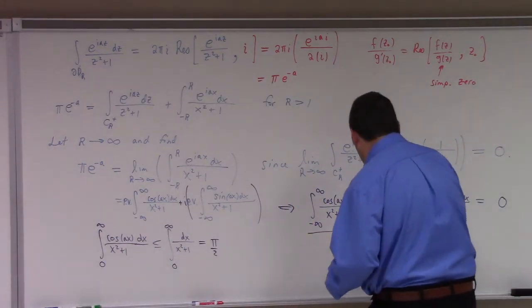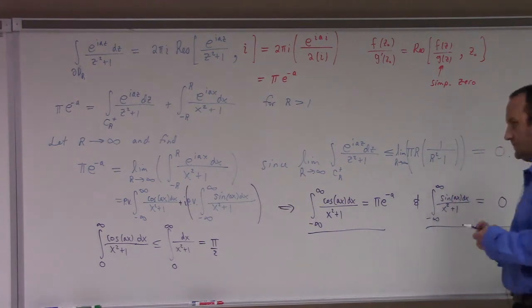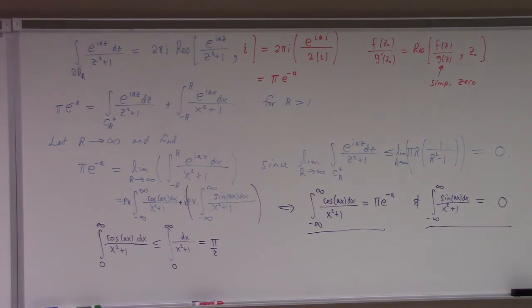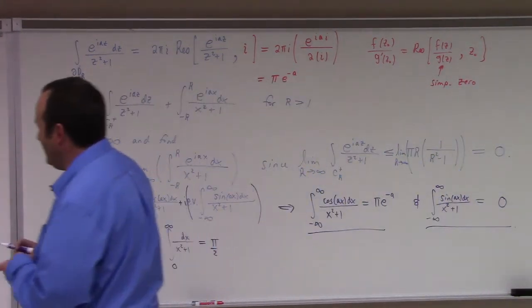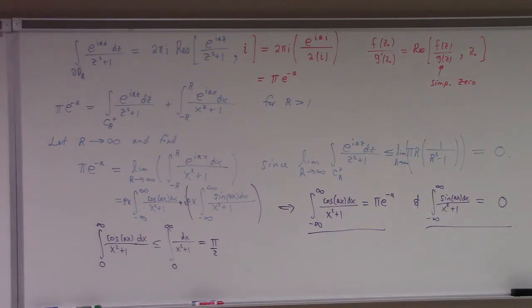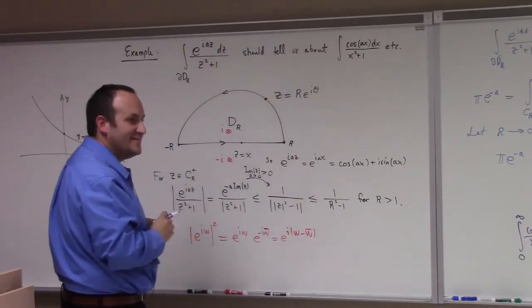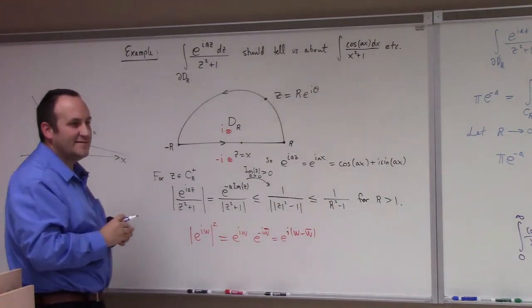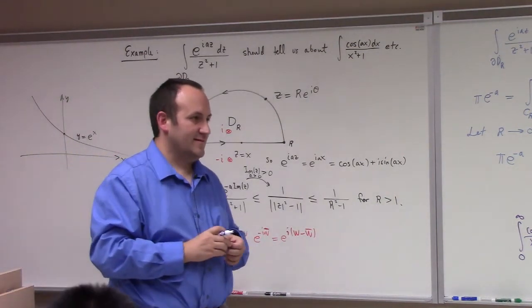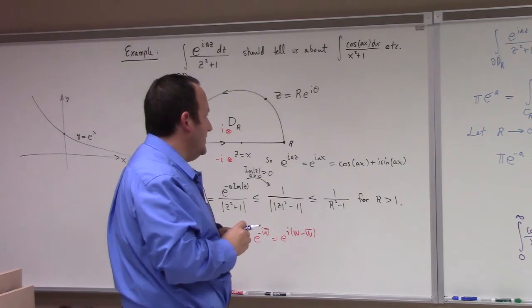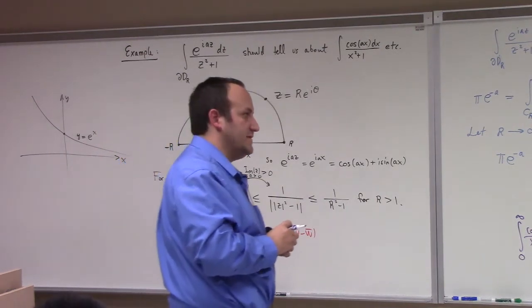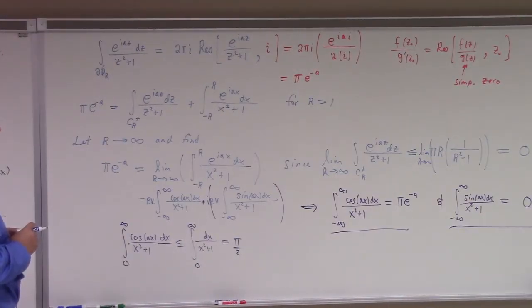If a were negative, then you could use the lower half disk. Very good — yeah, if a were negative, we should flip this thing over and use the lower disk. I think we get π e to the a, because we'd get the other residue — we'd put in minus i instead of i there. Yeah, I think we'd get π e to the a.